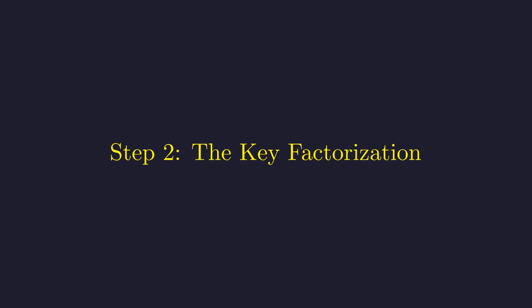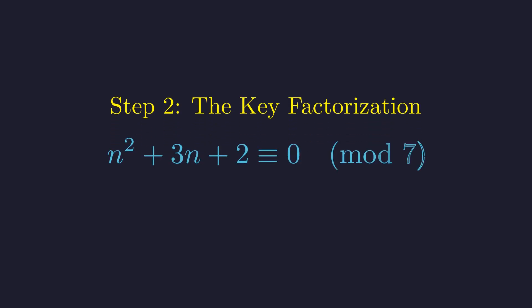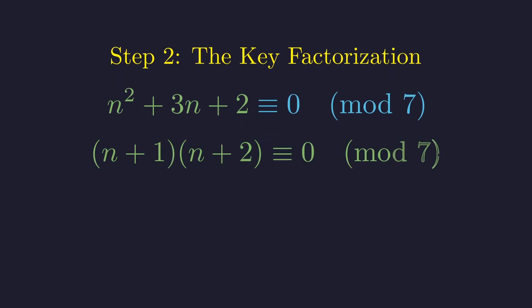The expression on the left is a standard quadratic, and it can be factored, which is the crucial insight. It becomes the product of the quantity (n + 1) and the quantity (n + 2). This is a massive simplification.